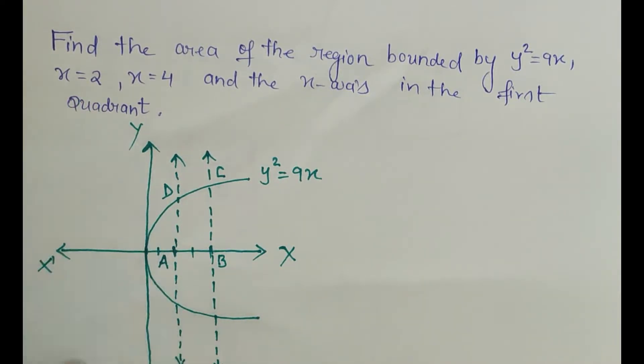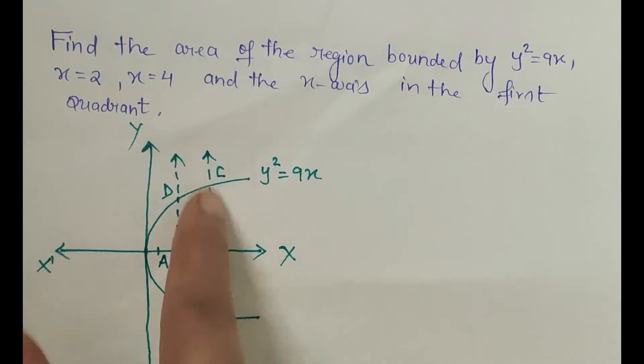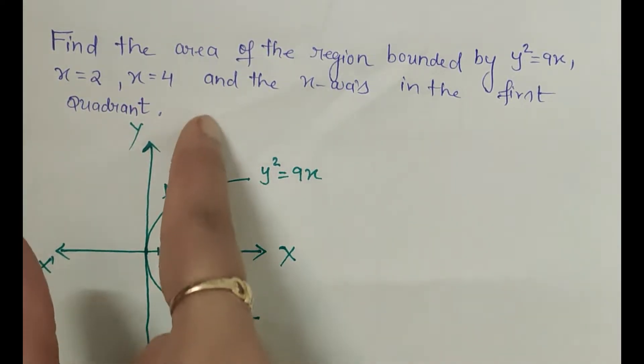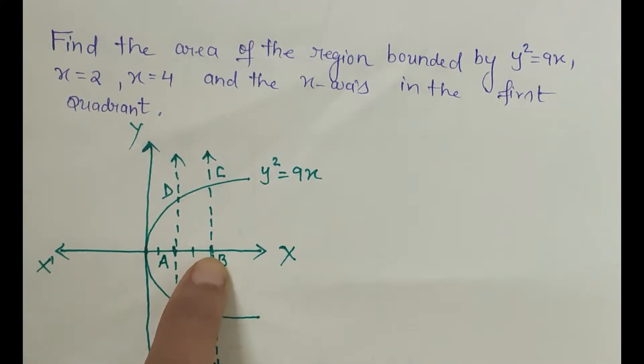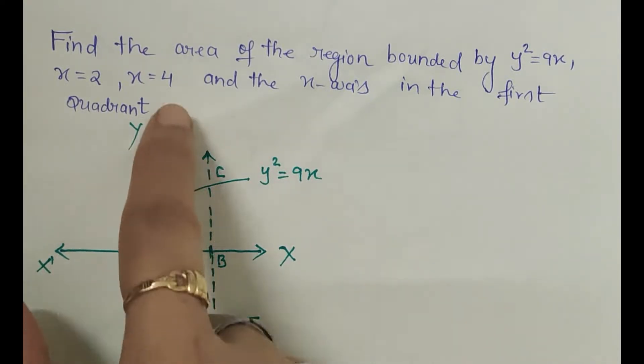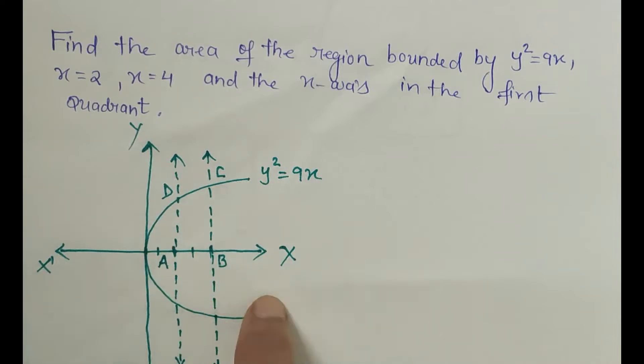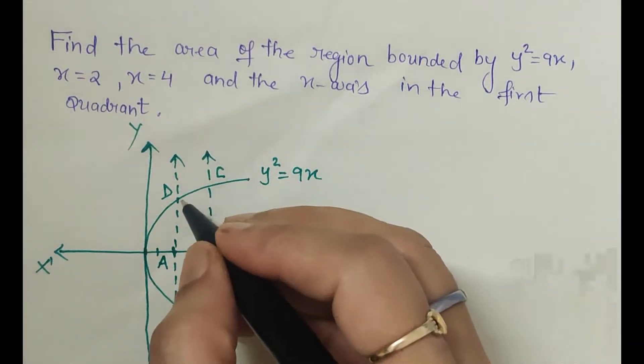The next equation is x = 2, that is why I have drawn the straight line x = 2. x = 4 is the straight line again which is passing through x = 4. Now we have to find area bounded by these two lines, this parabola in the first quadrant. That means we are talking about this shaded region.